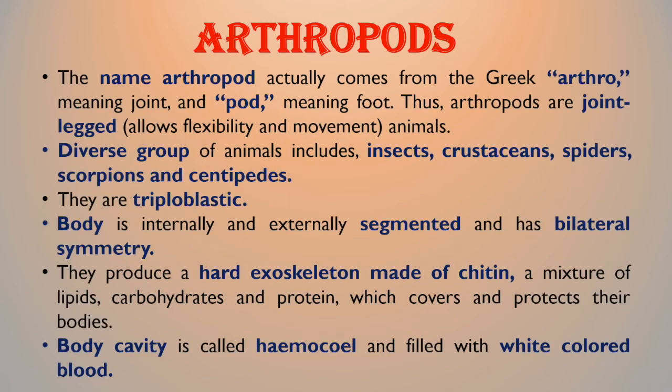The fourth group of invertebrates is arthropods. The name arthropod comes from the Greek arthro meaning joint and pod meaning foot, so arthropods are joint-legged animals. This is a diverse group of animals which includes insects, crustaceans, spiders, scorpions, and centipedes.